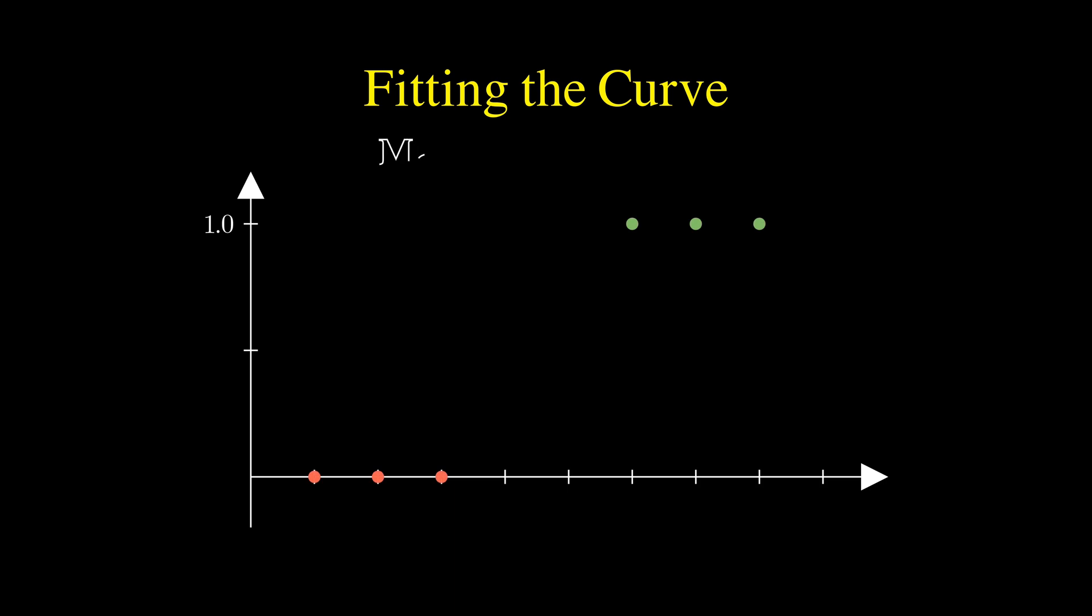So how does the algorithm actually learn the best curve? We don't use the same least squares method from linear regression. Instead, we use something called maximum likelihood. The goal is simple.